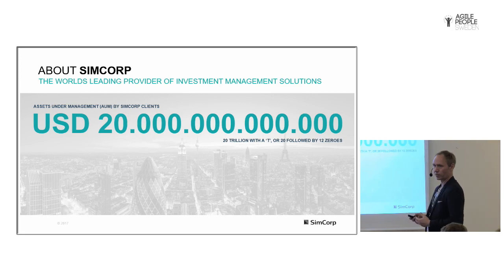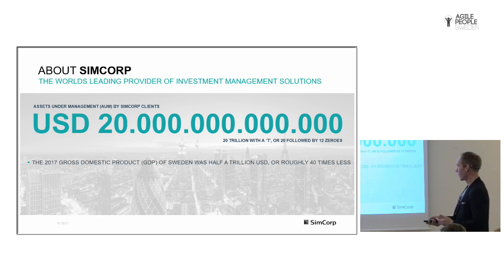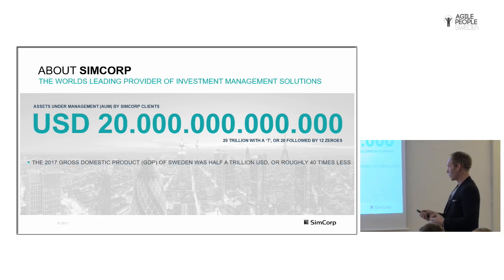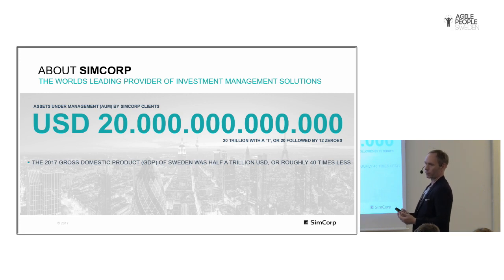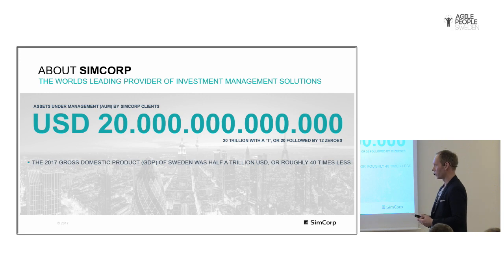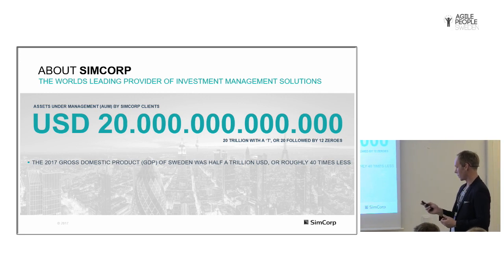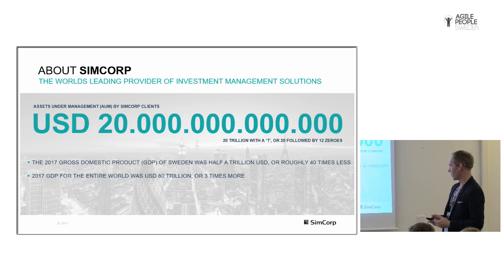This is a number so large it's hard to relate to, so just to give you something — we're in Sweden today, and the gross domestic product, the value of all goods and services produced in Sweden, a country of 10 million very productive people, was half a trillion. That's 40 times less.